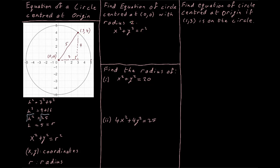We're told the radius is 2, so we write down the equation of our circle centered at the origin and substitute in: x squared plus y squared should be equal to 2 squared, substituting everything in brackets. We get x squared plus y squared is equal to 4.